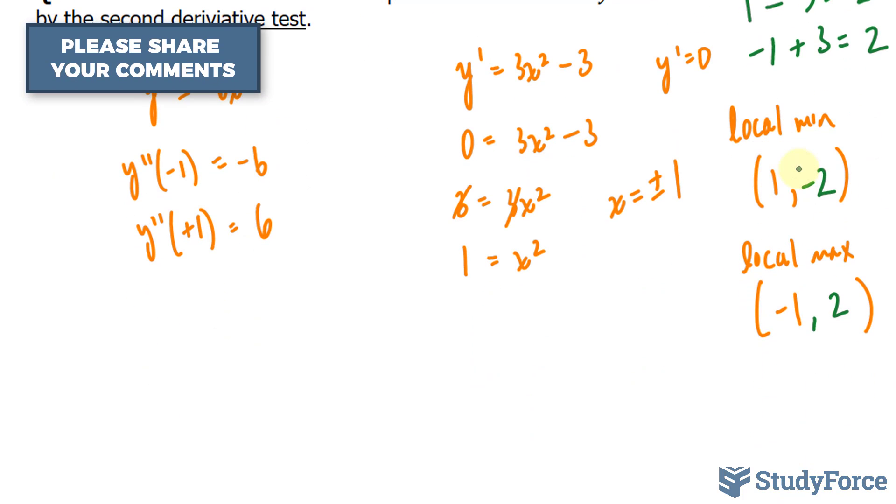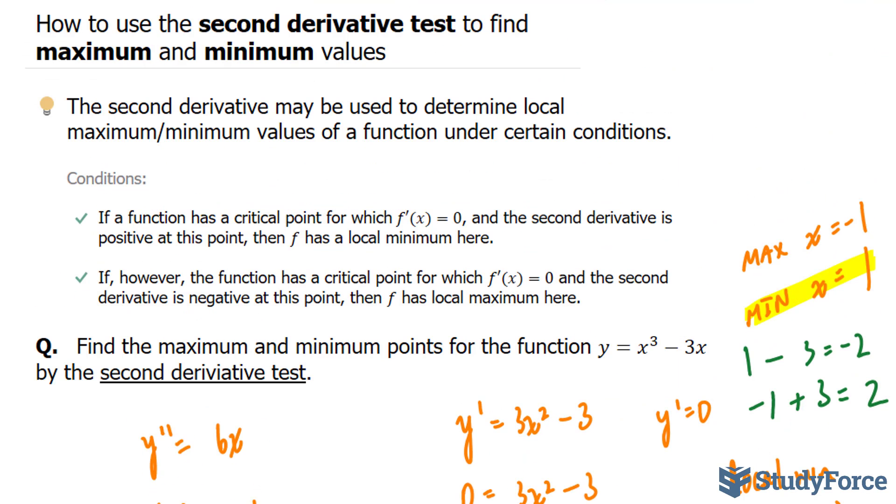So these represent the two points, which are our minimum and maximum. There you have it. That is how to use the second derivative test to find maximum and minimum values.